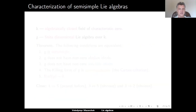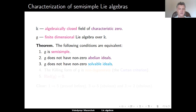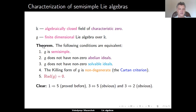Let us now give a characterization of semi-simple Lie algebras over algebraically closed fields of characteristic 0. Assume K is algebraically closed of characteristic 0 and G is a finite-dimensional Lie algebra over K. We claim the following conditions are equivalent: (1) G is semi-simple; (2) G does not have any non-zero abelian ideals; (3) G doesn't have any non-zero solvable ideals; (4) the Killing form of G is non-degenerate — this is called the Cartan criterion for semi-simplicity; and (5) the radical of G is 0. We have already proved that 1 implies 5 on the previous slide.